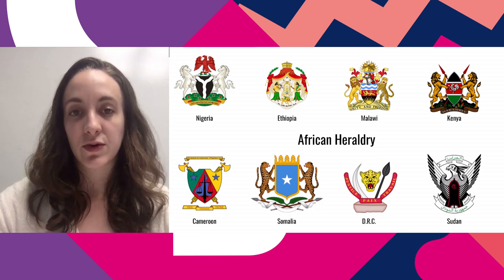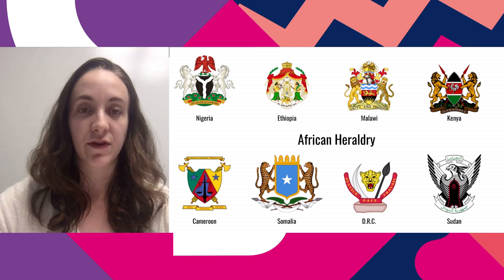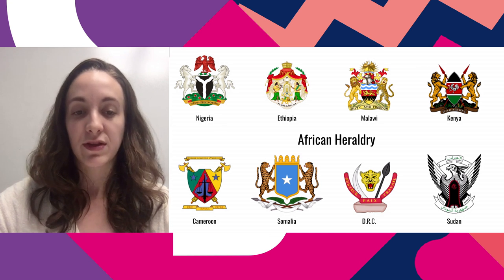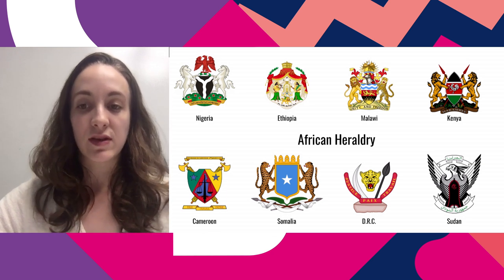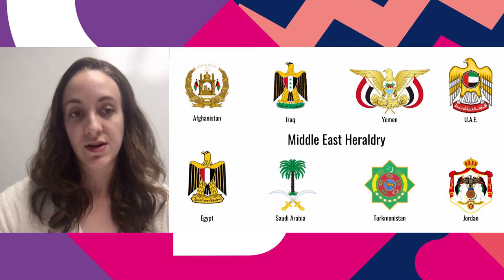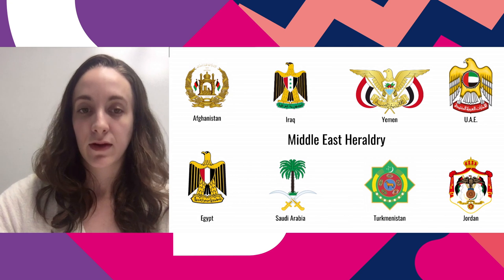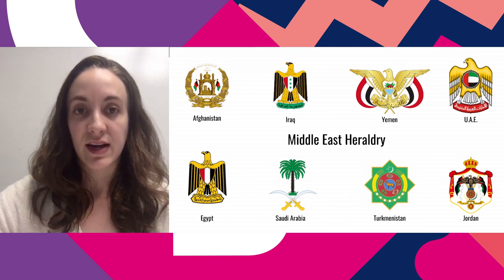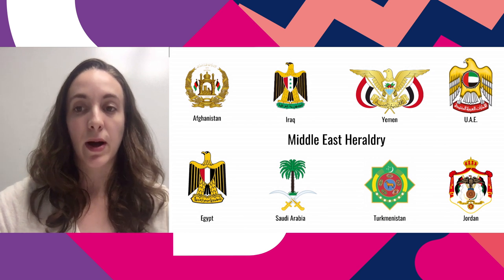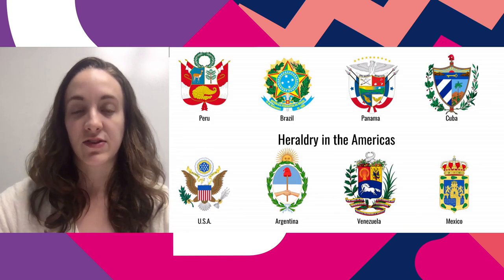In African heraldry, you can see Western influence — potentially as a result of colonialism — particularly for Nigeria, Malawi, Kenya, and Somalia, with two supporters on either side and a central shield. The coat of arms for Sudan features an eagle prominently, which is a common trend for coats of arms from the Middle East. Many Middle Eastern heraldic signs feature the Eagle of Saladin and some kind of motto on the bottom — interesting patterns within various regions.